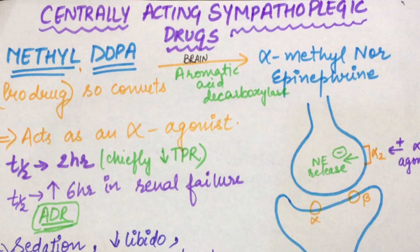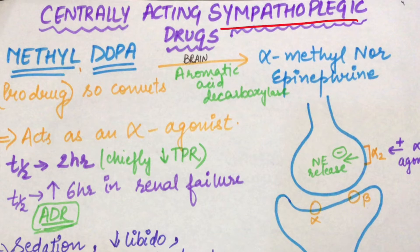We will talk about centrally acting sympathoplegic drugs. Sympathoplegia means to stop — like quadriplegia or paraplegia — we stop the sympathetic system. Centrally acting means we affect the brain and CNS, so the central sympathetic stimulation is not happening in the CNS. The first drug we use is methyl dopa.